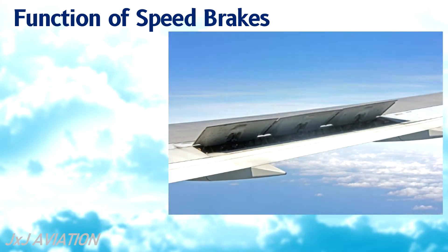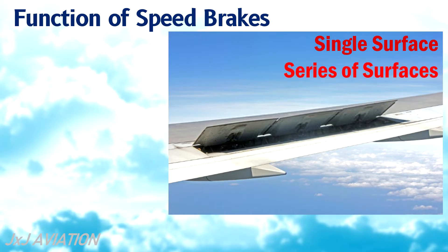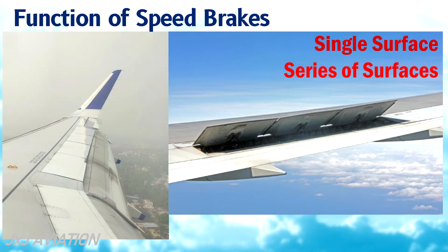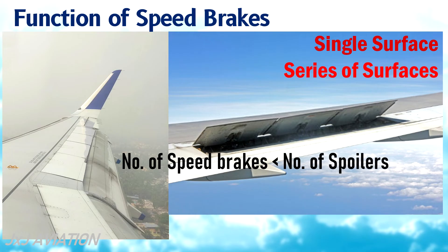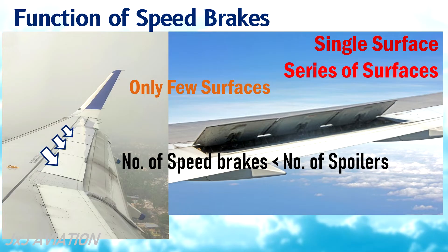The speed brakes may be a single surface or a series of surfaces installed on both the wings. The number of speed brake surfaces however will be less than the number of spoiler surfaces, which means that only a few surfaces out of all the surfaces which increase the drag act as speed brakes.